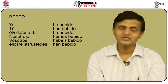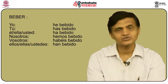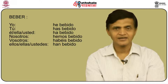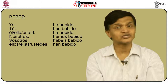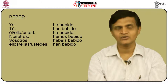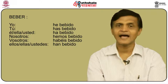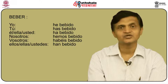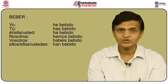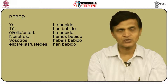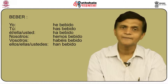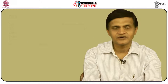For the verb beber, to drink, we conjugate with the past participle as: yo he bebido, tú has bebido, él/ella/usted ha bebido, nosotros hemos bebido, vosotros habéis bebido, and ellos/ellas/ustedes han bebido. Remove the ER and put IDO.